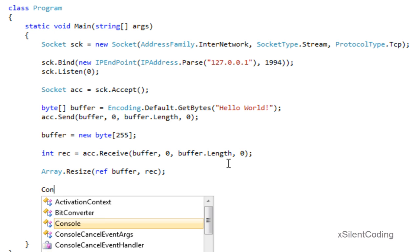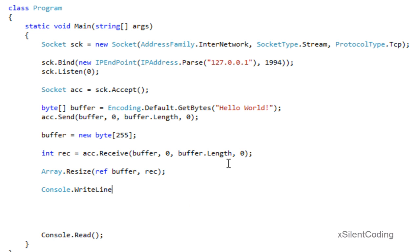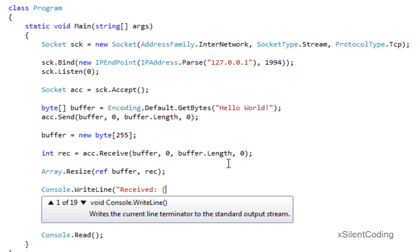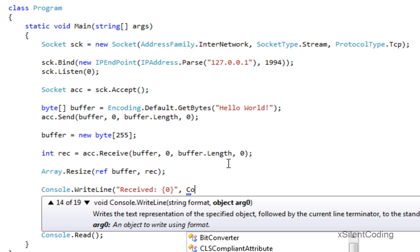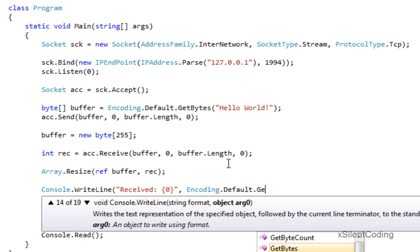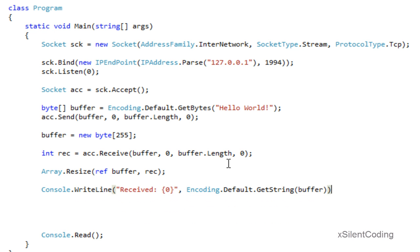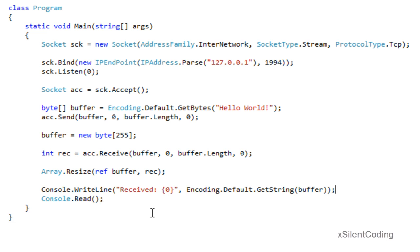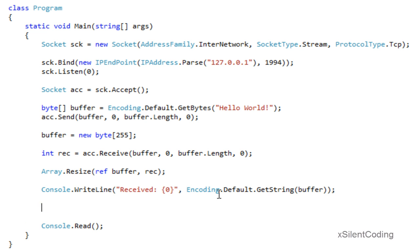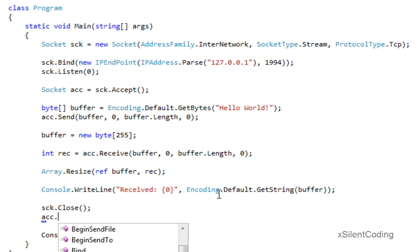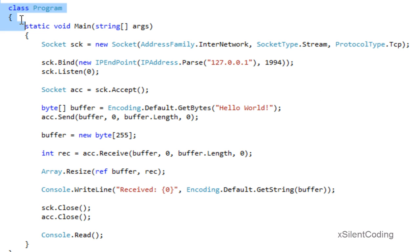Then let's write to the console what we received: Console.WriteLine(Encoding.Default.GetString(buffer)). After we receive the data we write it to the console, and then the console will wait for input and close. This is our basic server connection. Let's clean up everything: socket.Close(), accept.Close(). The console will wait for input and then close. This is our basic server, and next tutorial we will code our client.